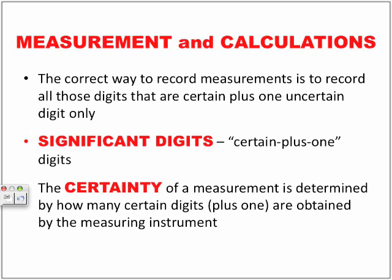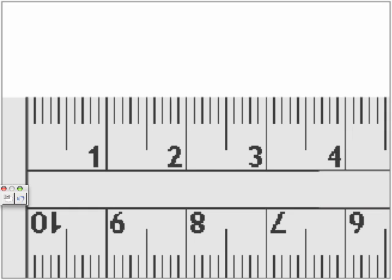Let's look at what that means with the following example. Here we have our ruler and we're going to put in a measurement. If we look at it in terms of a metric ruler, we are looking at two centimeters. But according to the certain plus one rule, we don't really know if this could be 2.1. Maybe it might be 1.9999 and so on. We don't know that.